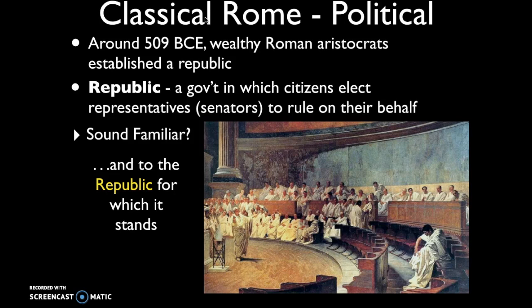When Benjamin Franklin exited the Constitutional Convention, he was asked what type of government the Founding Fathers had established. He said, 'A republic, if we can keep it.' The Founding Fathers were very dubious of democracy because they were fearful of giving the people too much power.